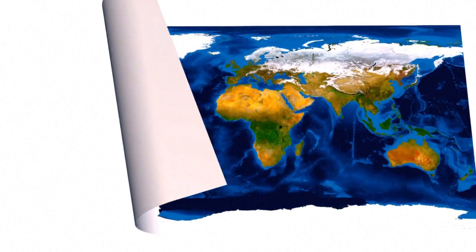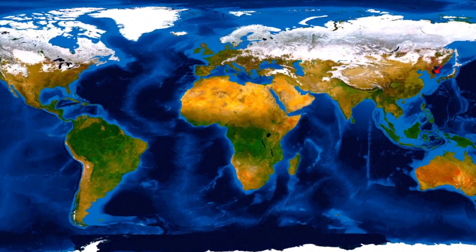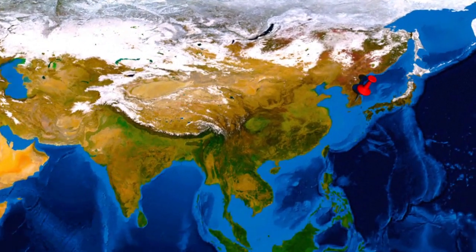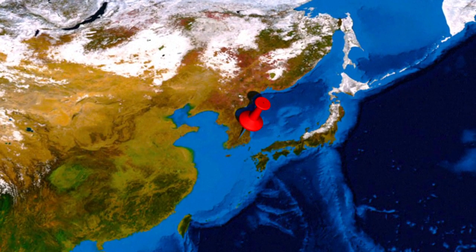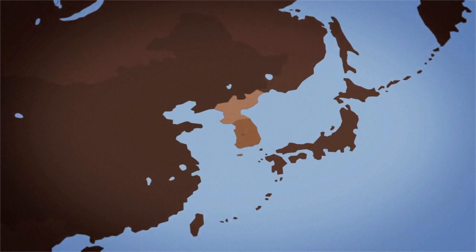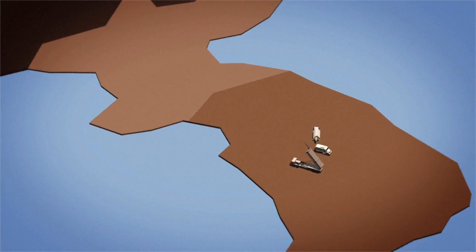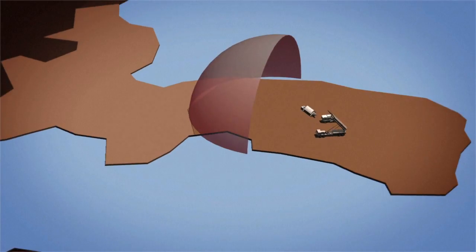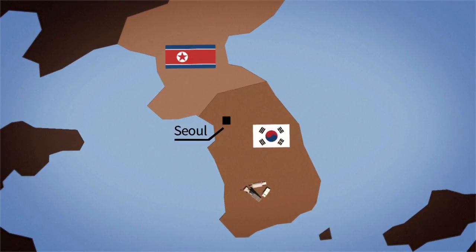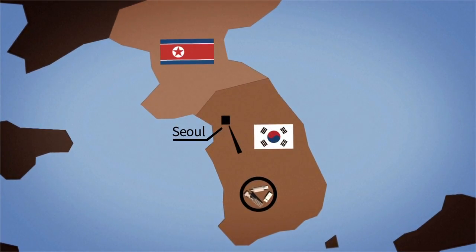The United States deployed its Terminal High Altitude Area Defense System, known as THAAD, in South Korea in 2017. The billion-dollar system is intended to guard against missile threats from the nuclear-armed North. It's based in a former golf course 250 kilometers south of Seoul.